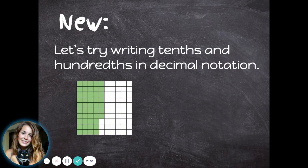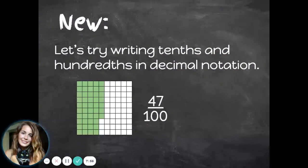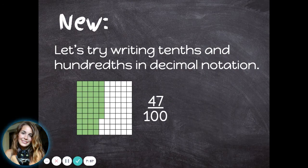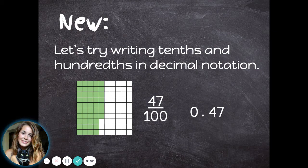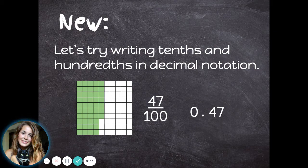Let's look at another example of hundredths. This time I have forty-seven hundredths. To write forty-seven hundredths as a decimal, I have zero ones, then comes the decimal, forty-seven. Notice forty-seven reaches into the hundredths place. It's the same way you would write forty-seven cents.